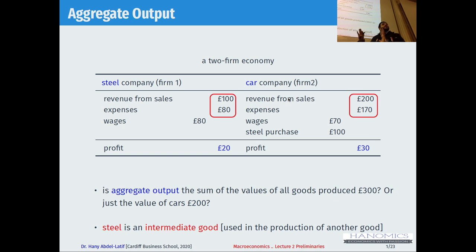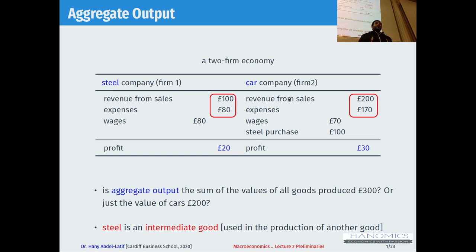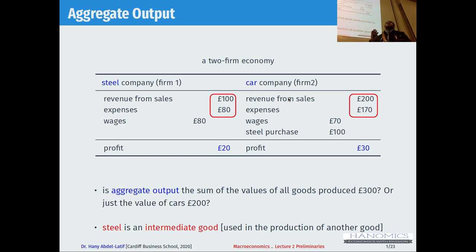So £200, in our simple example, is the GDP or the aggregate output or the gross domestic product for this country in this year. Why? Because this is the value of the final goods. Final goods here are cars, not steel.